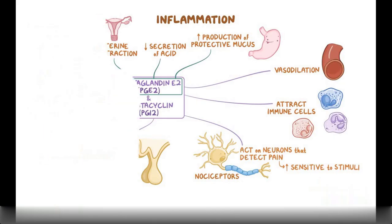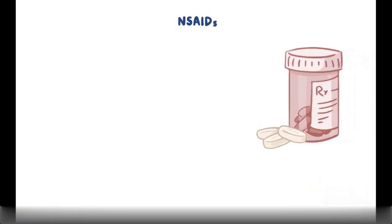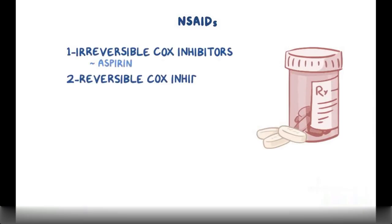Depending on how they interact with these enzymes, NSAIDs are subdivided into two main groups: irreversible COX inhibitors, like aspirin, and reversible COX inhibitors, or non-aspirin NSAIDs.